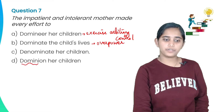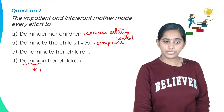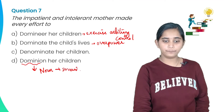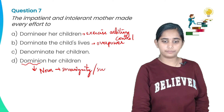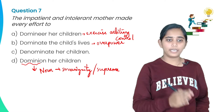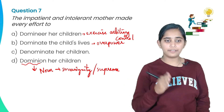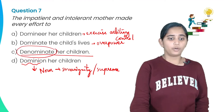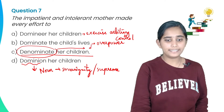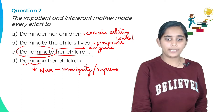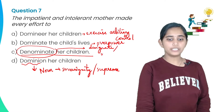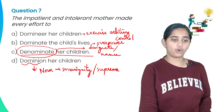As far as 'dominion' is concerned, it is a noun and not a verb — it means sovereignty or supreme power. 'Denominate' means to designate or name. So the impatient and intolerant mother made every effort to denominate her children. Option C is the answer.